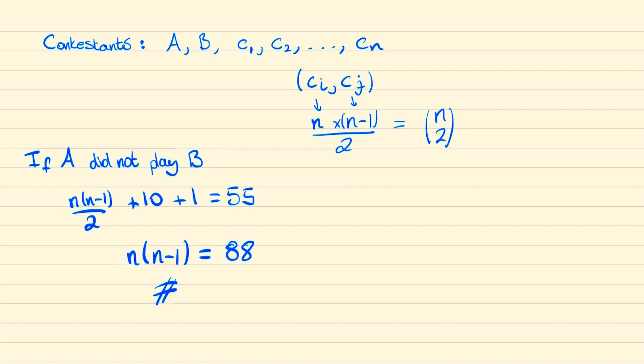The second possibility is that A did play B. Then we would still need to count all the games from the contestants c1 to cn, so that would be n times n minus one over two. But this time, given that A and B played each other, we need not count the extra game by B, so we only need to add 10 to make a total of 55.